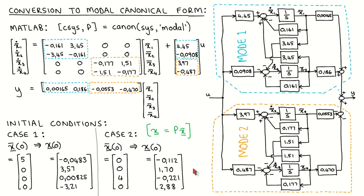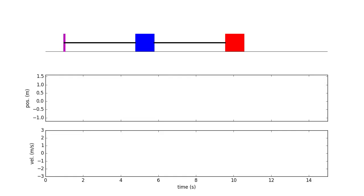Let's now excite the second mode. We set the initial value of state x3-bar to 4 and the rest of the states to zero. We now expect the behavior of the system to be completely determined by the natural response of the second mode. Using the transformation matrix again gives us the initial original state vector, and we run the simulation.